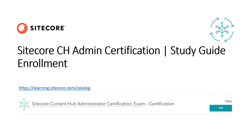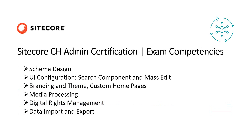Once you are enrolled, the next thing is the actual exam competencies. In total there are 12 different topics as part of this admin certification. Starting with schema design — you'll learn about entities, how to extend them, taxonomies, option lists, and different types of fields. The second topic is UI configuration — you'll learn about search components, mass edit, branding, and teams.